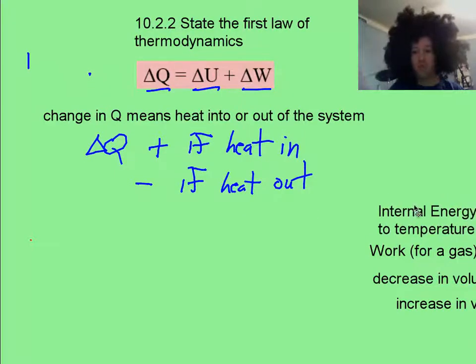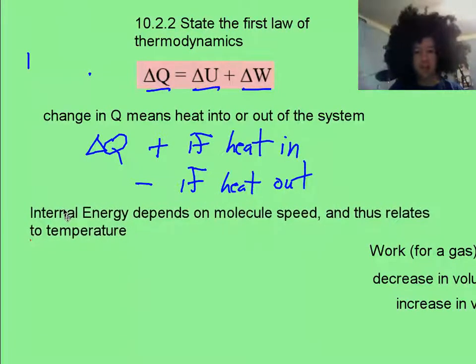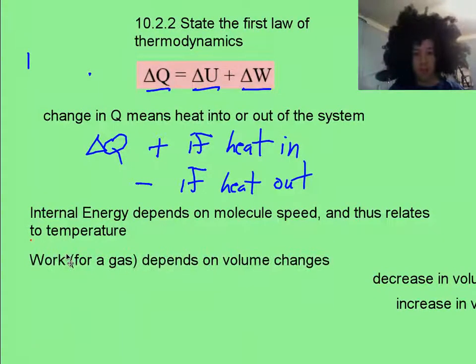Now, this delta U, that's the internal energy, and that's how fast those little gas molecules are moving. We're only dealing with gases, so we don't care about potential energy, only kinetic energy. They move faster, thermal temperature, or the temperature is going up.